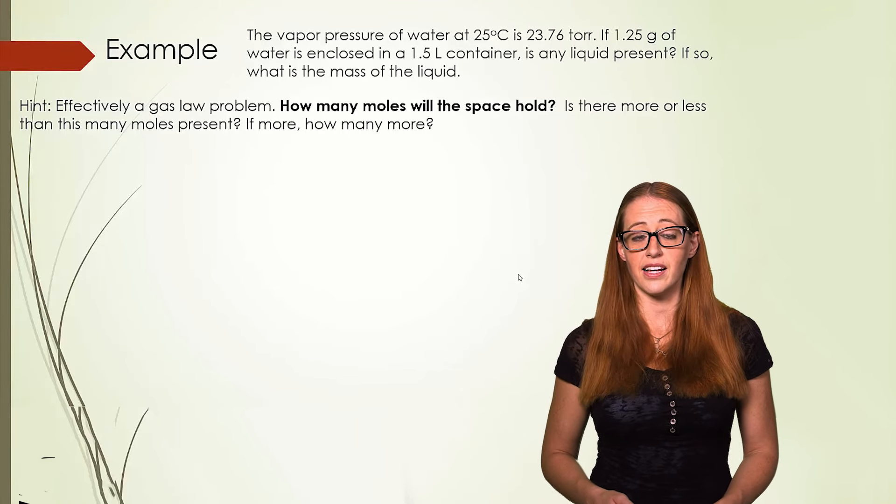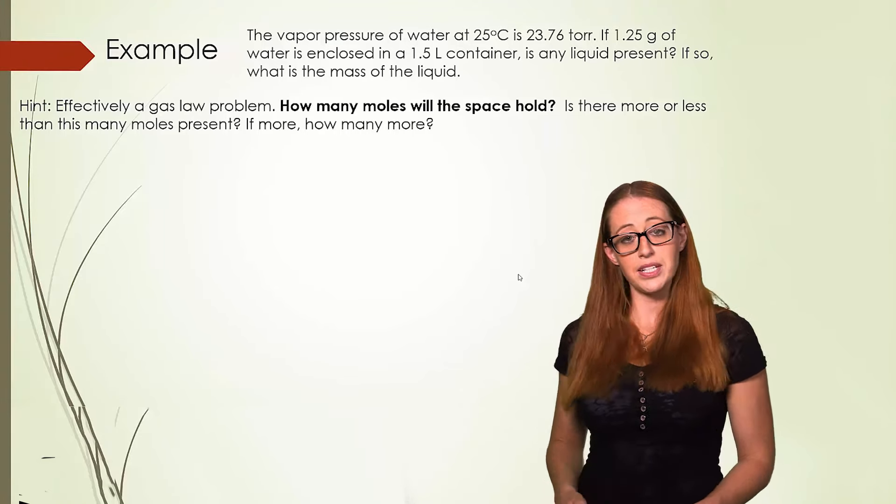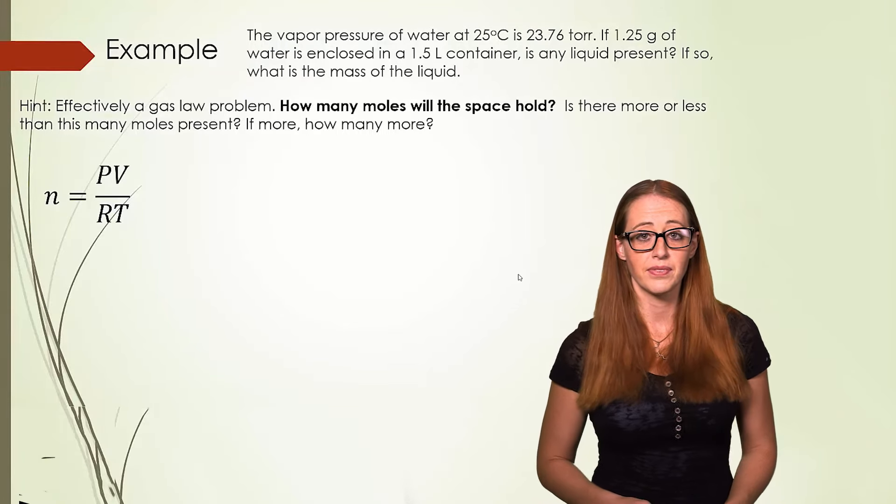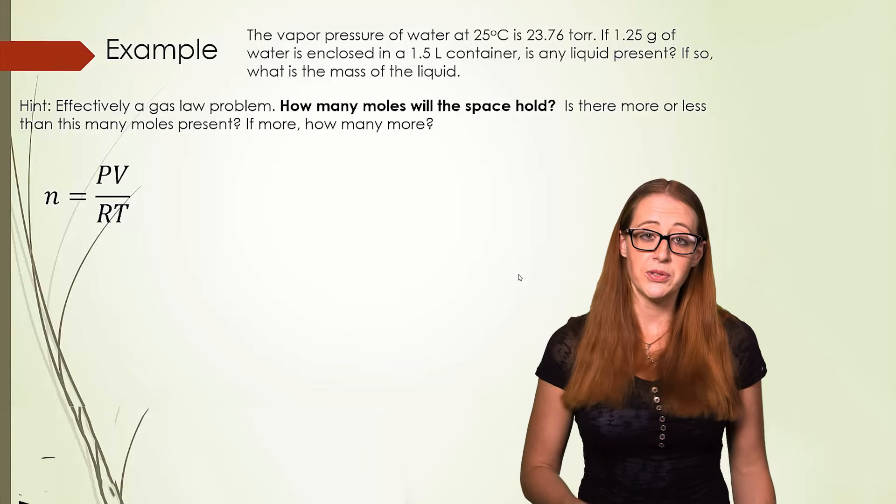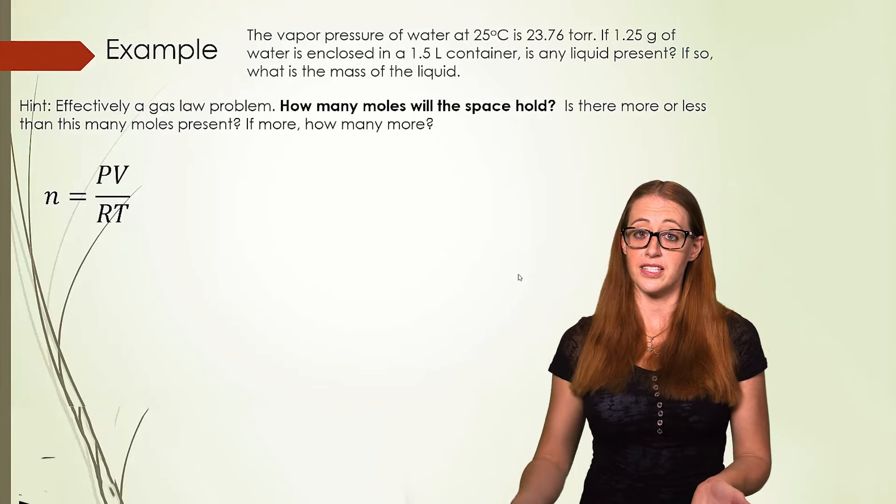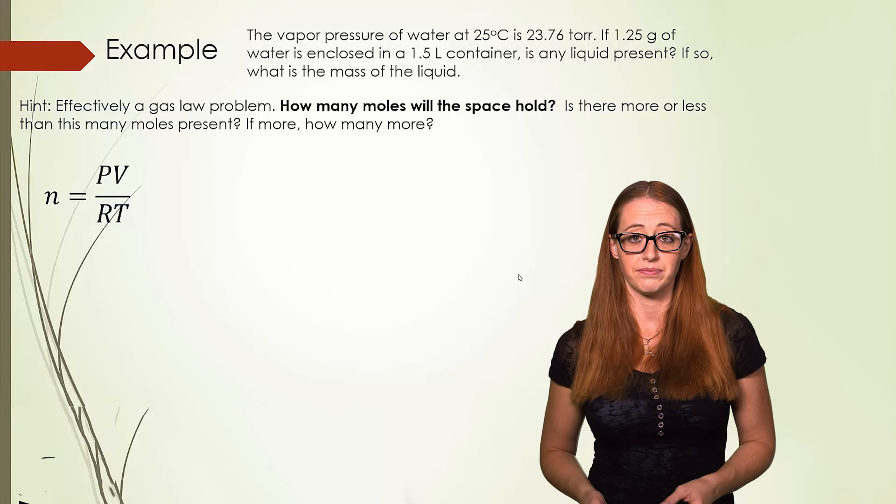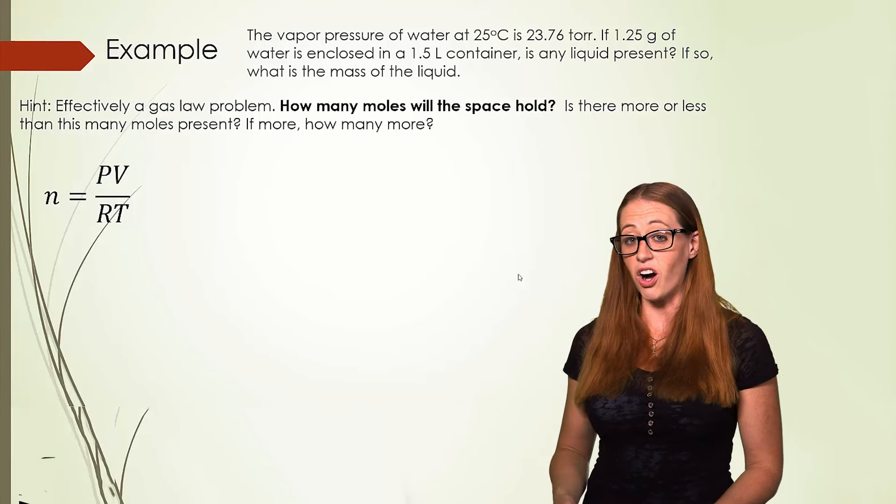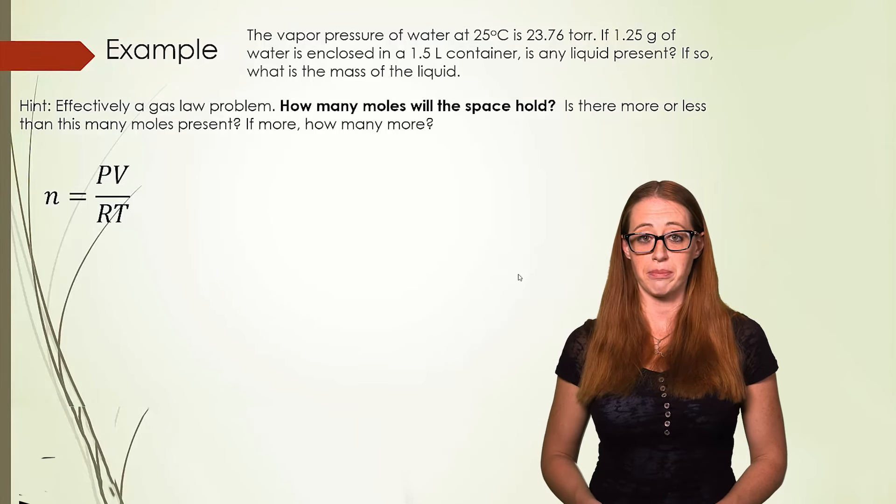Here, we'll use the ideal gas law and solve for n. If you need some review on the ideal gas law, just go revisit those videos. For our pressure, we'll be using the vapor pressure, because all we care about is the pressure of the substance that is going to be evaporating. We'll use the volume of the container, we'll use the r, and then we'll change temperature to kelvin.